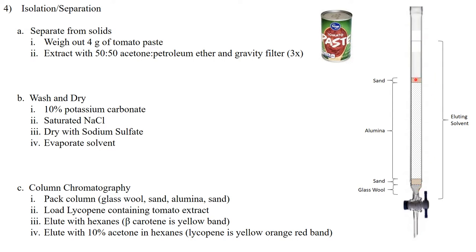The reason we put the sand in there is so that we do not disturb the alumina. It is actually a very fine powder, and the sand is pretty coarse. So when we add things to the top of our column, we don't disturb that alumina.